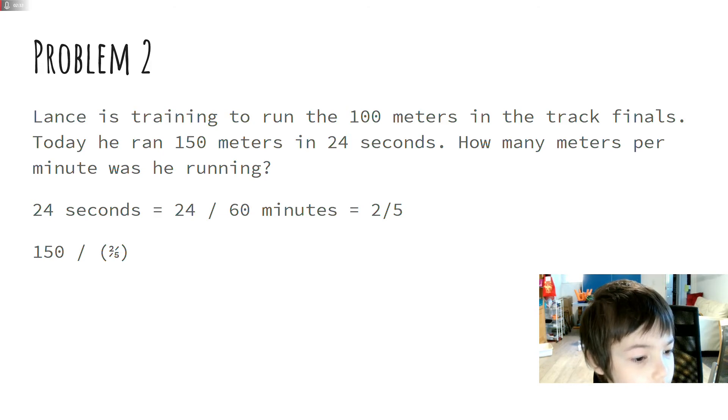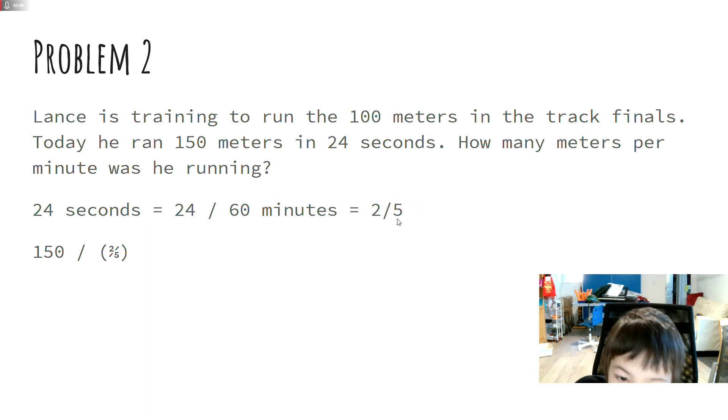So then 150, he said 150 meters in 24 seconds. So that means you do 150 divided by 2 over 5. Because 24 seconds is 2 over 5, and then he ran this much in this much time. So you want to do this divided by this.